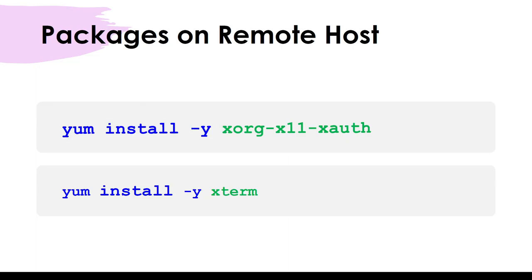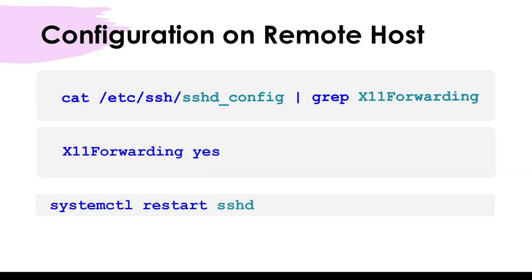On the remote host where you want to do the forwarding, install some mandatory packages such as xorg-x11-xauth and xterm. There may be additional packages required depending on your environment. Once packages are installed, there is an sshd_config file under /etc/ssh. In that file, X11Forwarding is set to 'no' by default - change it to 'yes'.